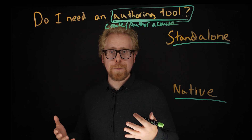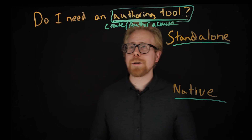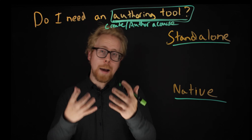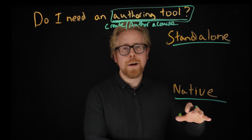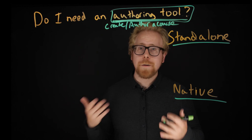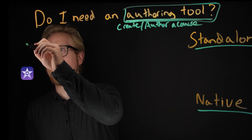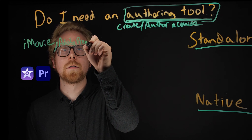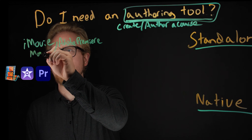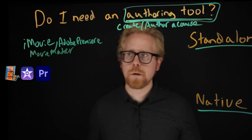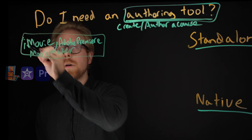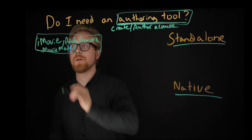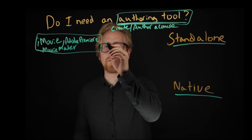Let's go over some examples. How do you create a video? There are different tools you use. We're using a camera, filming a lightboard, creating the video. But once we capture that footage, we're editing it, adding graphics, compiling things together. What do you use to do that? Video editing software, such as iMovie, Adobe Premiere, or Windows Movie Maker. An authoring tool is to courses just as these editors are to videos.